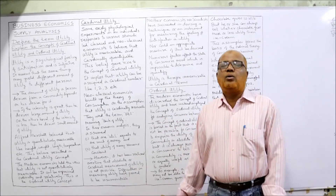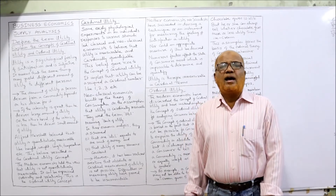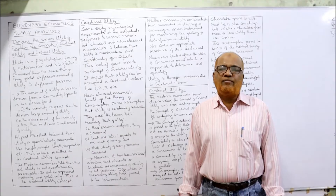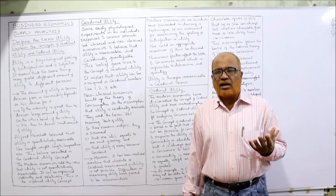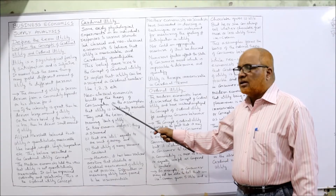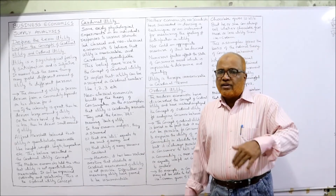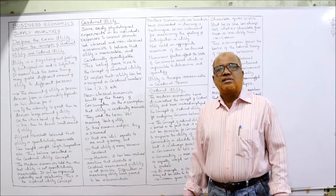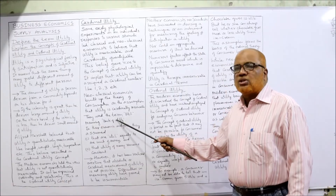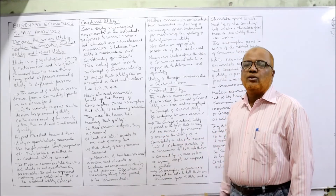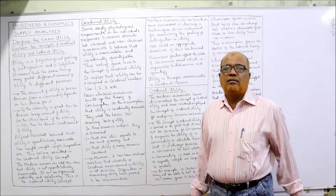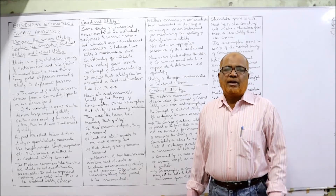Cardinal utility implies that utility can be assigned a cardinal number like one, two, three, four. The classical and neoclassical economists say utility can be measured in terms of numbers — we can say how many units of satisfaction we get. The neoclassical economists built up the theory of consumption on the assumption that utility is cardinally measurable. They used the term 'util' meaning a unit of utility.